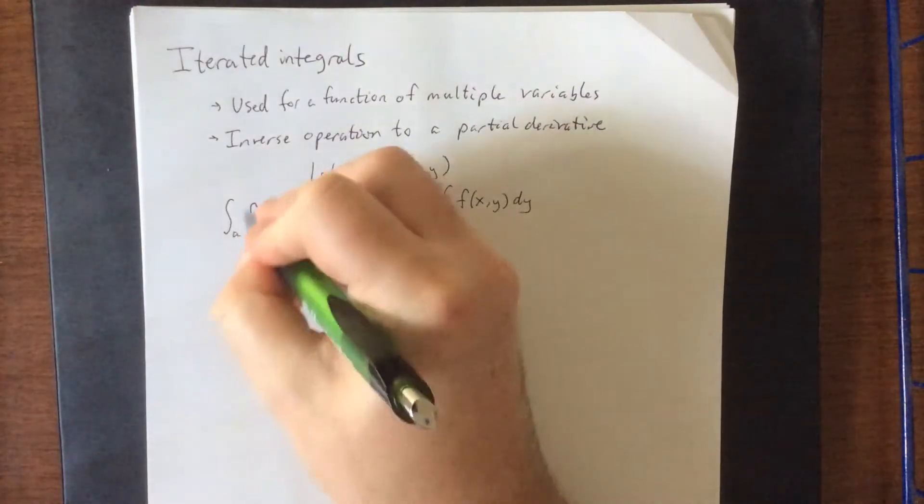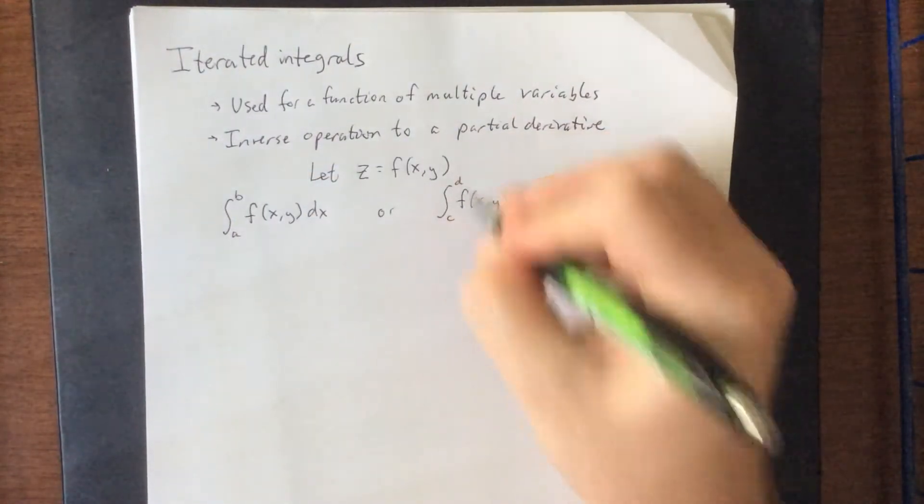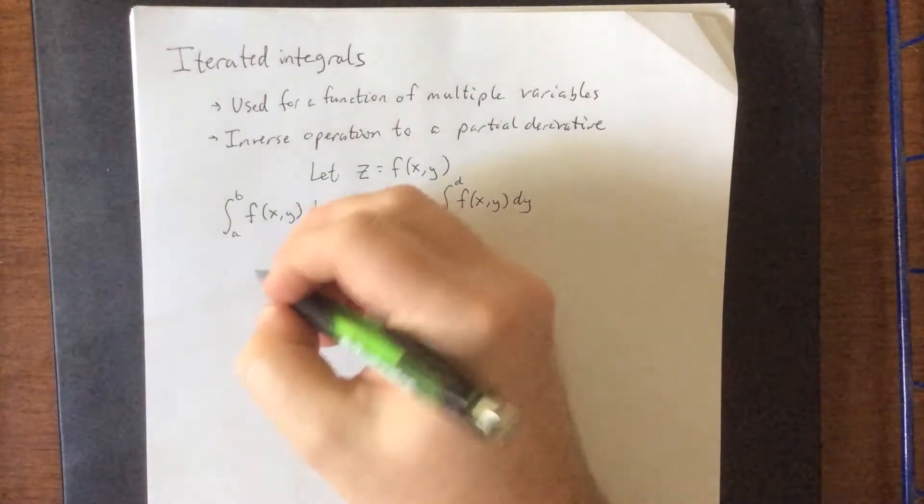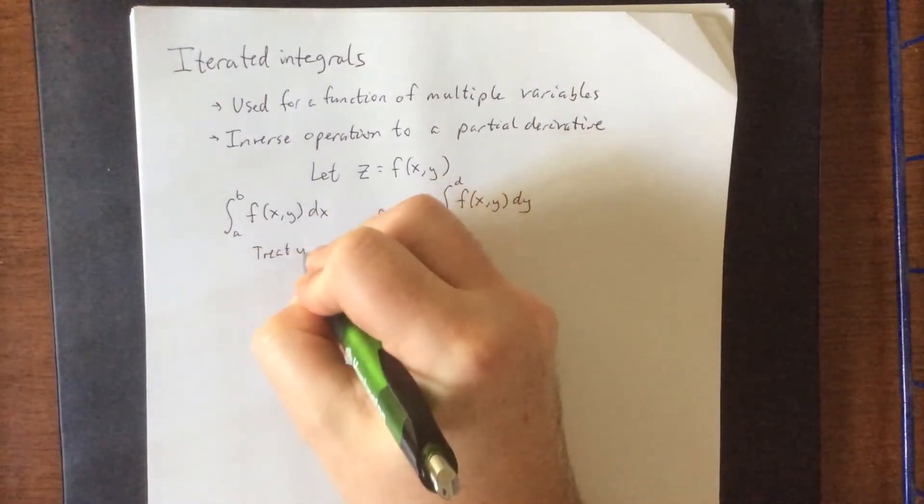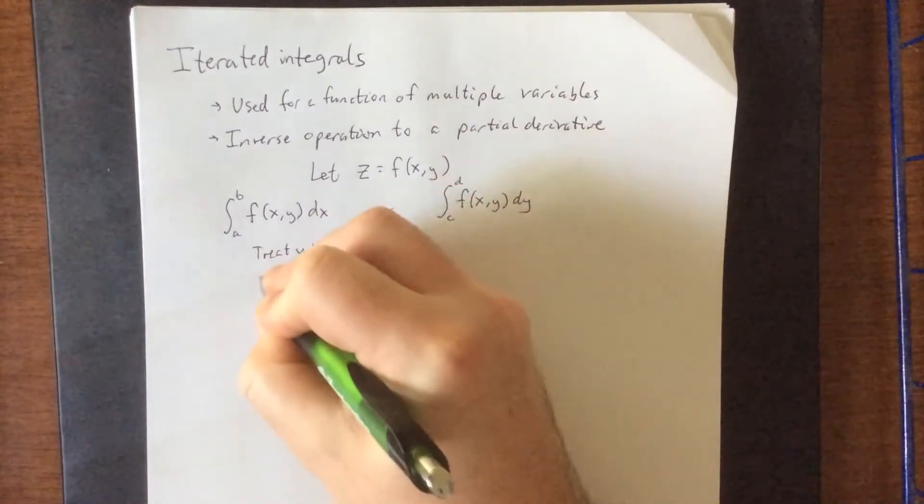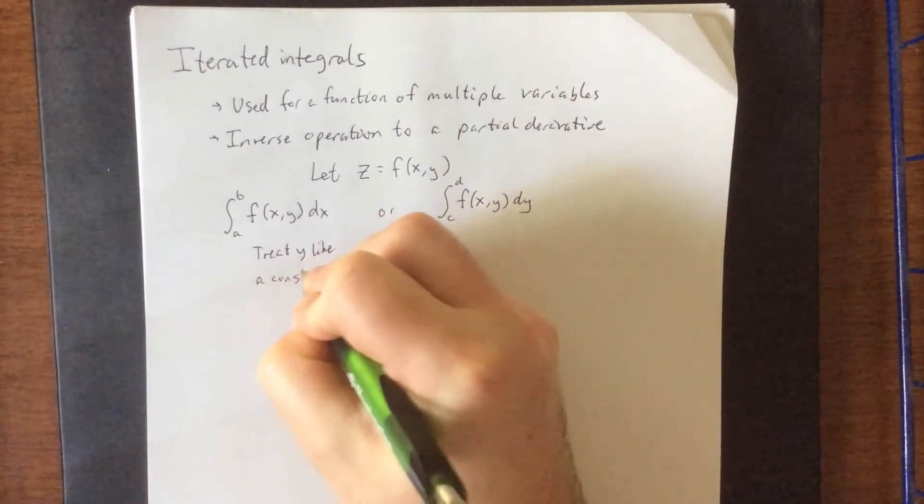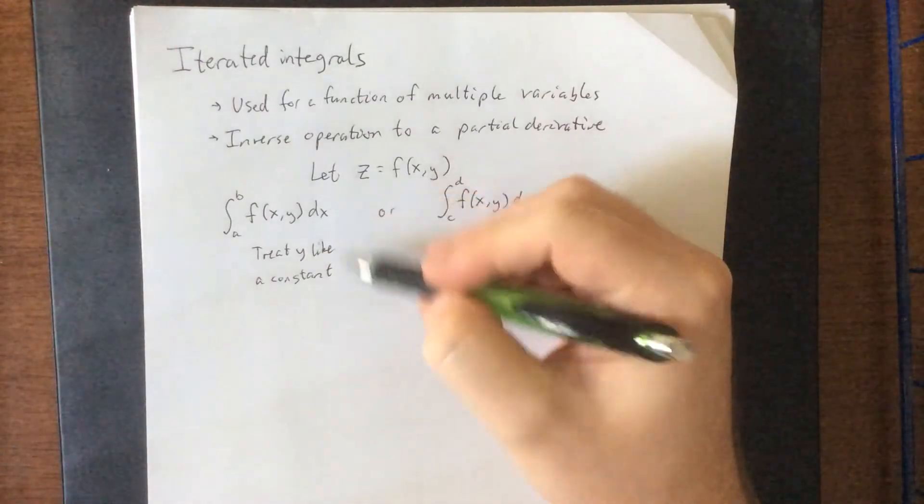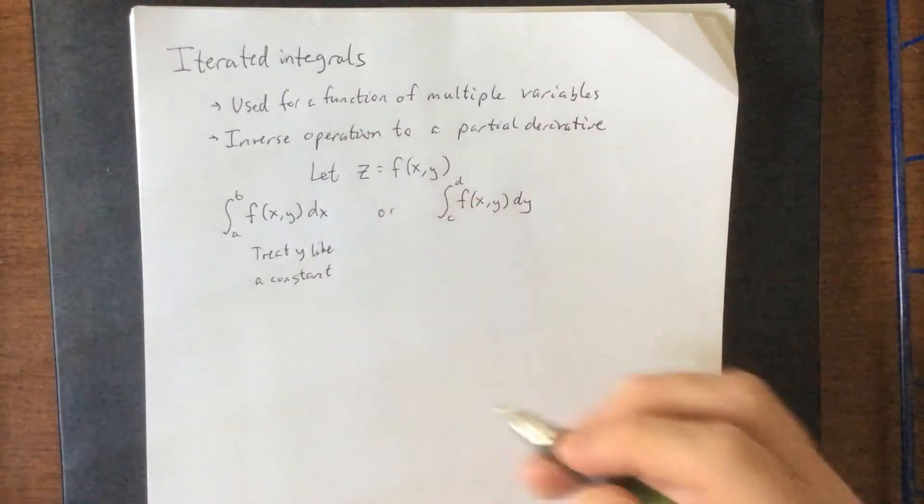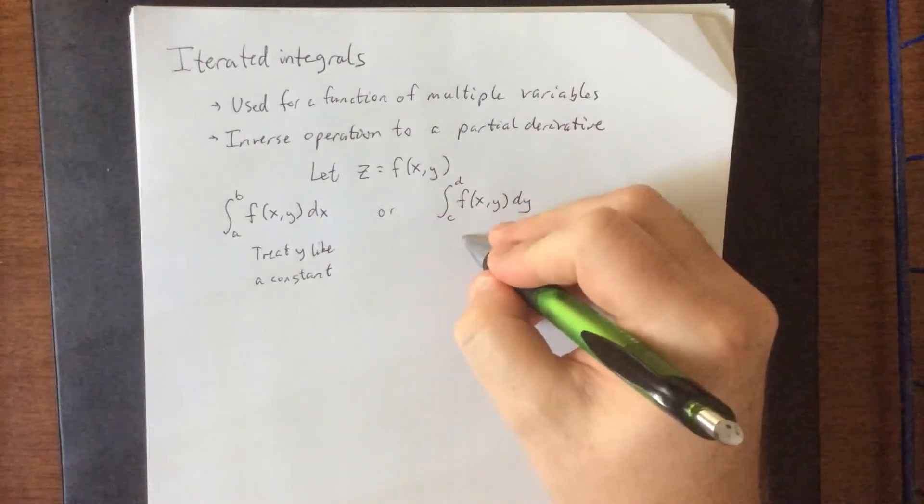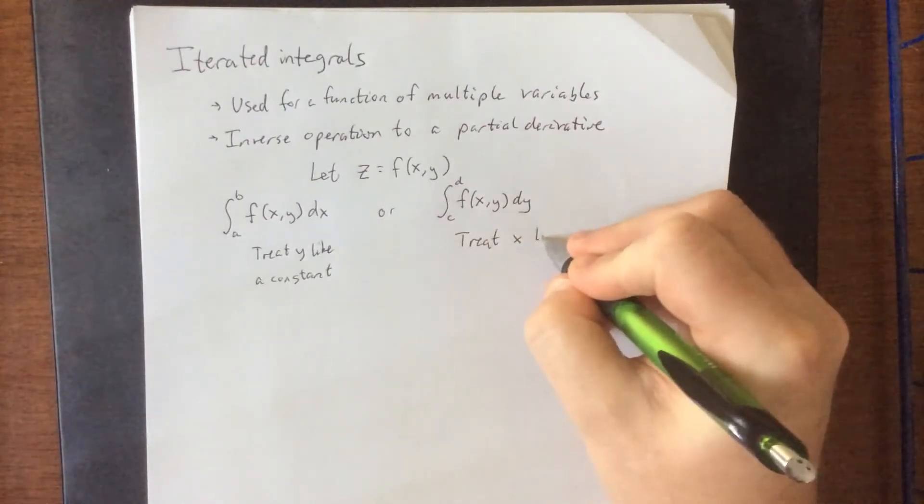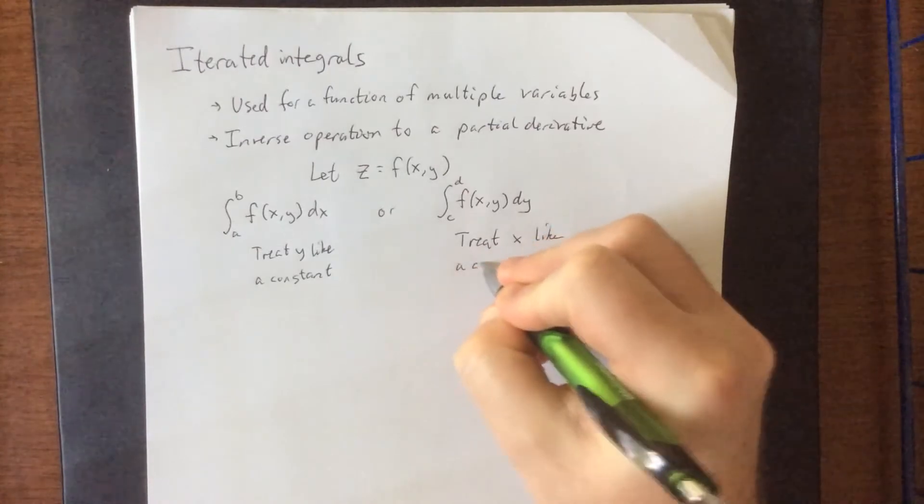Now, because we need it on here, iterated integrals for the time being will be a form of a definite integral. So in this situation, we are going to treat y like a constant. We've already designated x as our variable, so we're going to be treating y as though it's a constant as we integrate. Whereas over here, we're treating y as though it's a constant, so we are going to treat x like a constant.